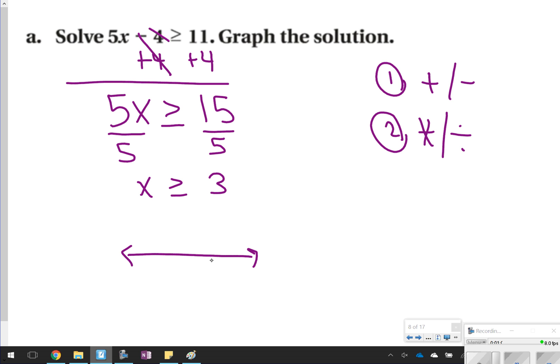To graph the solution, I'm going to draw my number line. I have a closed circle because 3 is a part of the solution, and I'm going to point to 4 because x needs to be greater than or equal to 3.